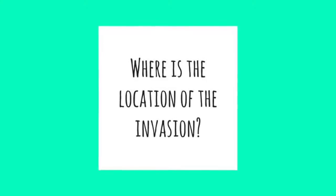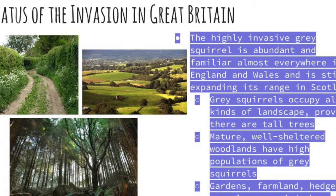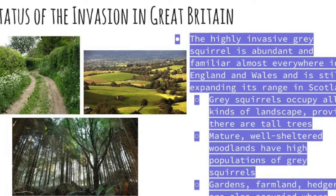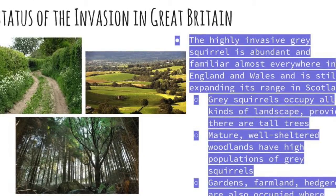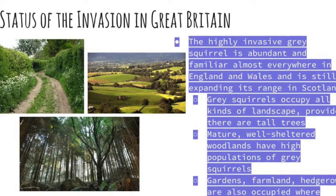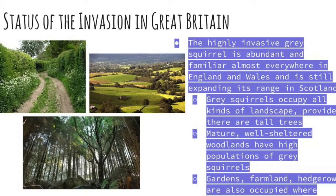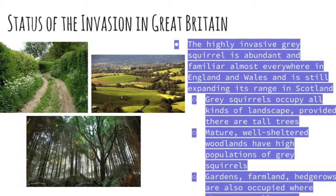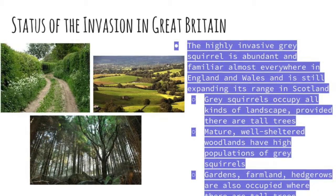Where is the location of the invasion? Status of the invasion in Great Britain: the highly invasive gray squirrel is abundant and familiar almost everywhere in England and Wales, and is still expanding its range in Scotland. Gray squirrels occupy all kinds of landscapes, provided there are tall trees. Mature, well-sheltered woodlands have high populations of gray squirrels.